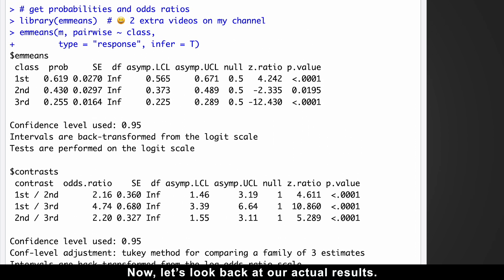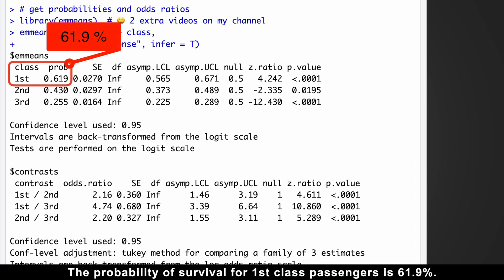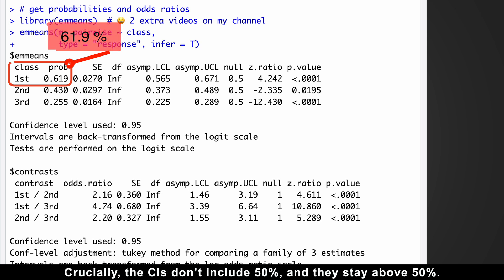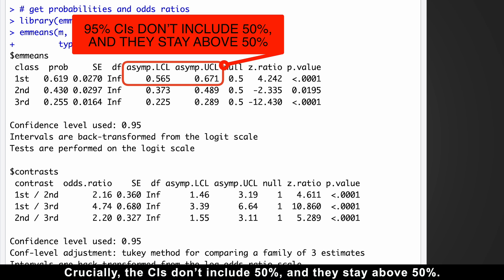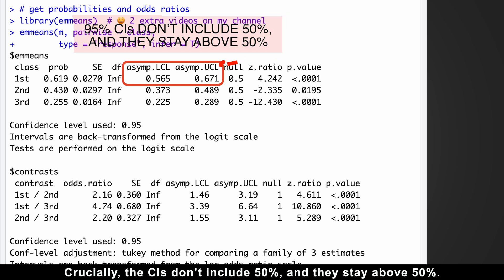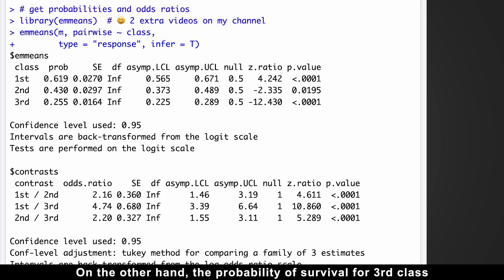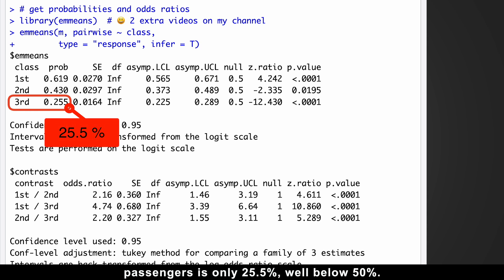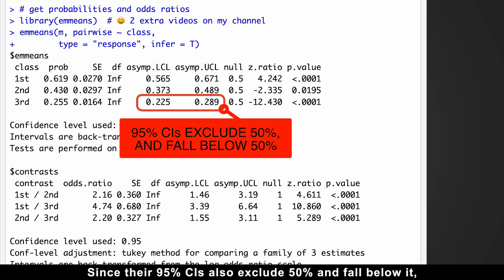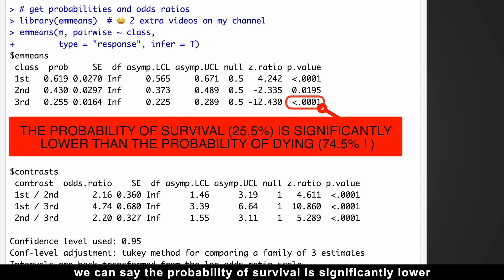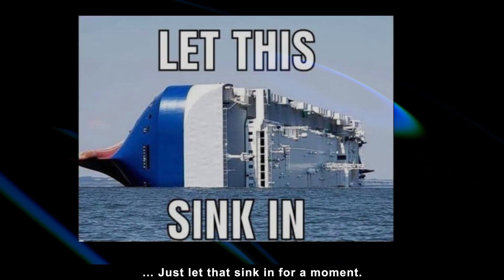Now let's look back at our actual results. The probability of survival for first-class passengers is 61.9%. Crucially, the confidence intervals don't include 50% and they stay above 50%. This means first-class passengers are significantly more likely to survive than die. On the other hand, the probability of survival for third-class passengers is only 25.5%, well below 50%. Since their 95% confidence intervals also exclude 50% and fall below it, we can say that the probability of survival is significantly lower than the probability of dying, which in this case would be a staggering 74.5%. Just let it sink for a moment.